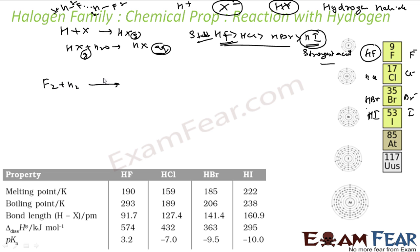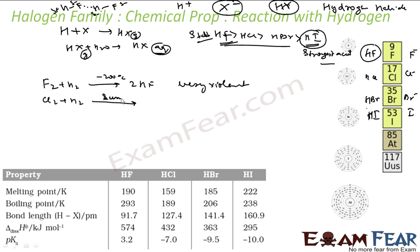Fluorine reacts with hydrogen even at −200°C and the reaction is very violent. Chlorine reacts with hydrogen only in the presence of sunlight to form 2HCl; it is a chain reaction and therefore explosive, but it takes place only in the presence of sunlight.